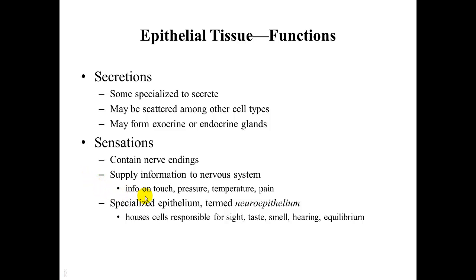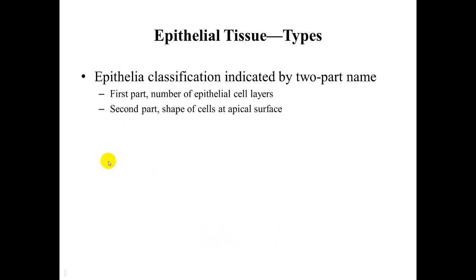Epithelial tissue can give information on touch, pressure, temperature, and pain. You can also have specialized epithelium termed neuroepithelium — these are the cells responsible for sight, taste, smell, hearing, and equilibrium.